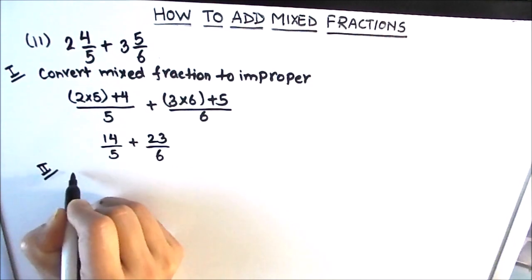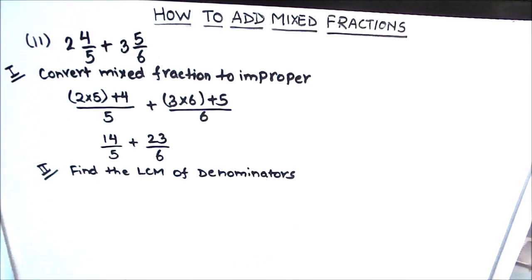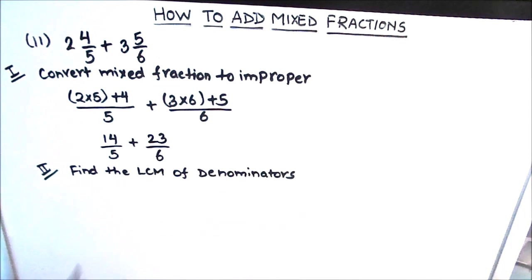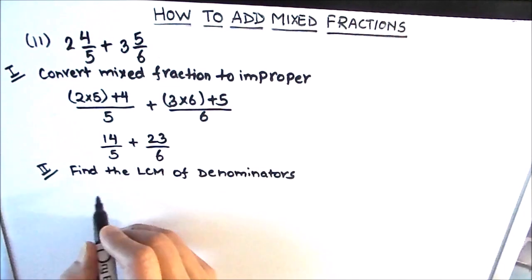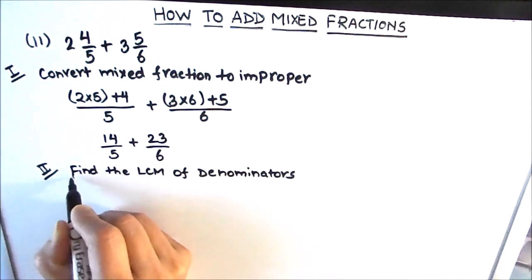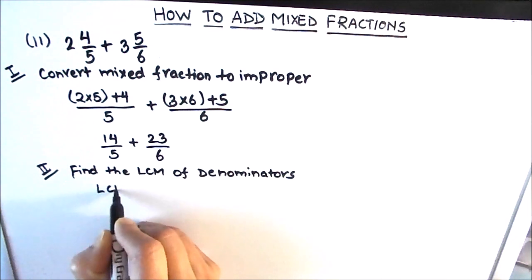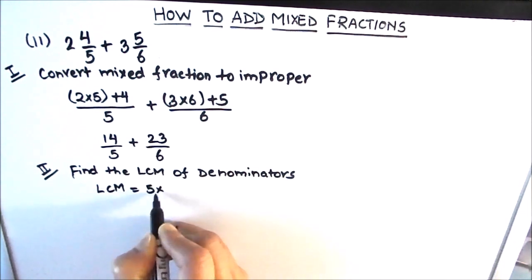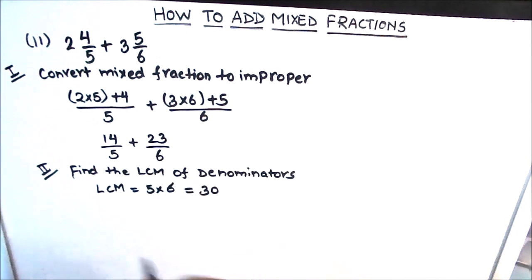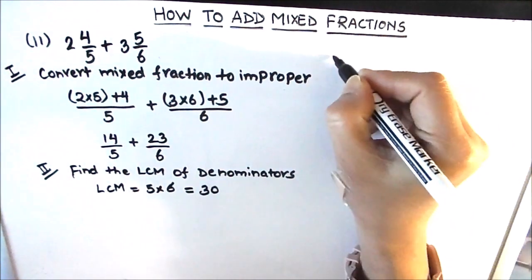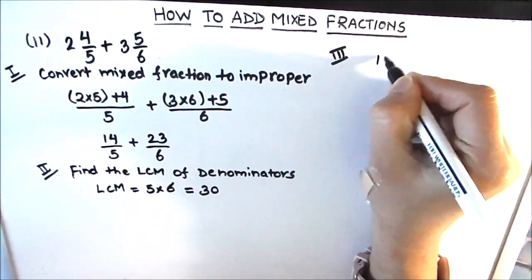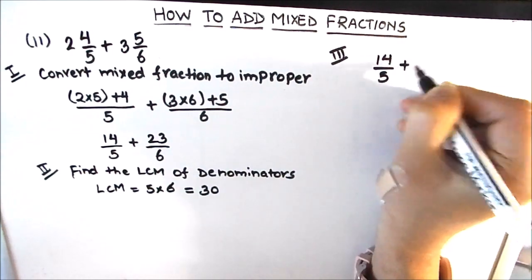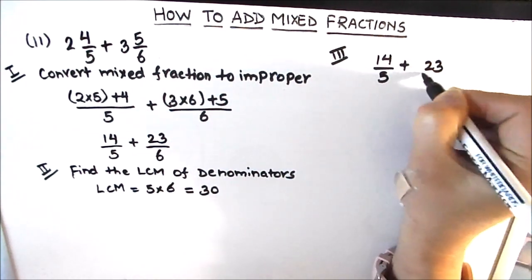The second step is to find the LCM of the denominators. Here we see that the denominators are 5 and 6. There is no common factor between 5 and 6, so the LCM of 5 and 6 will be 5 × 6 = 30.